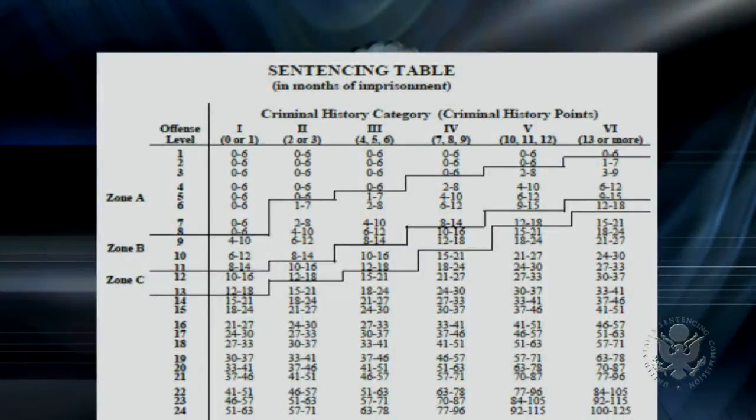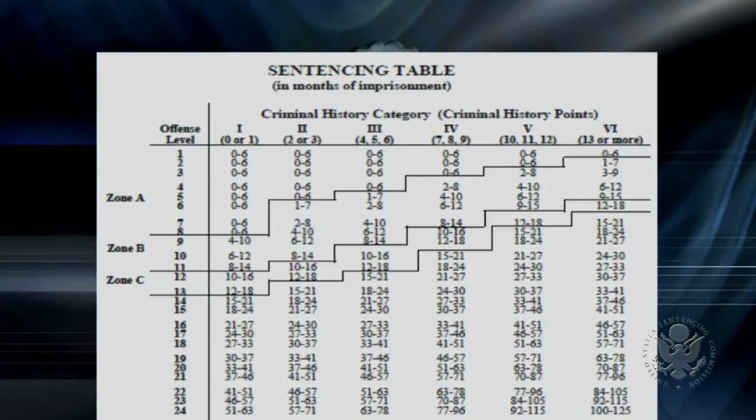The sentencing table, as you can see on this graphic, plays a critical role in the sentencing of Federal criminal defendants. The intersection of a particular point on the vertical axis, which provides a numeric proxy for the severity of the defendant's conduct in the instant offense, with a particular point on the horizontal axis, which provides a criminal history category based upon the severity of the defendant's prior criminal offenses, will provide the court with the applicable guideline range for a particular defendant.